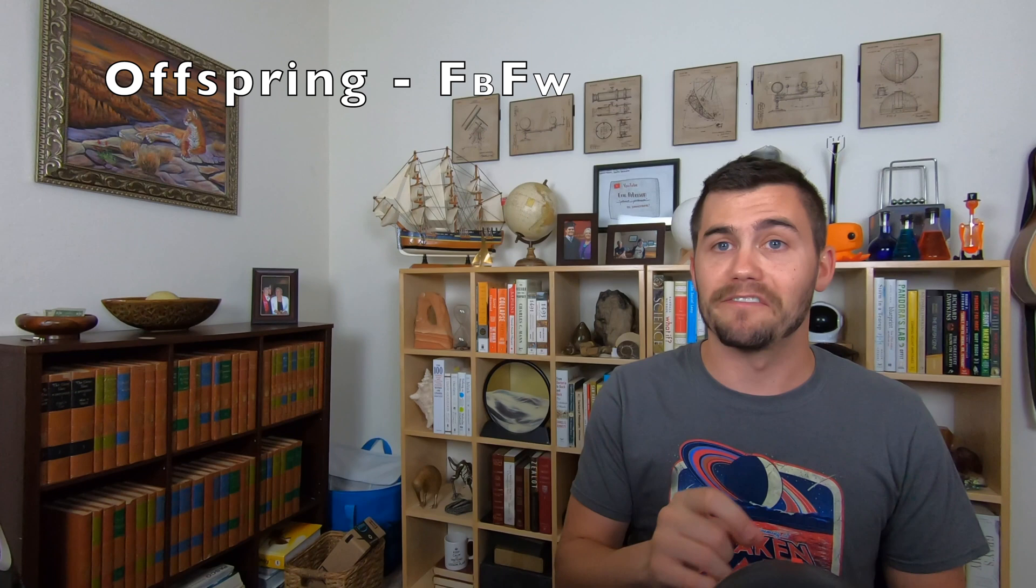Well, certain types of chickens can have black or white feathers. An all-black chicken would have the phenotype FBFB, and an all-white chicken would have the genotype FWFW. Their offspring would have the genotype FBFW, but they wouldn't be gray.